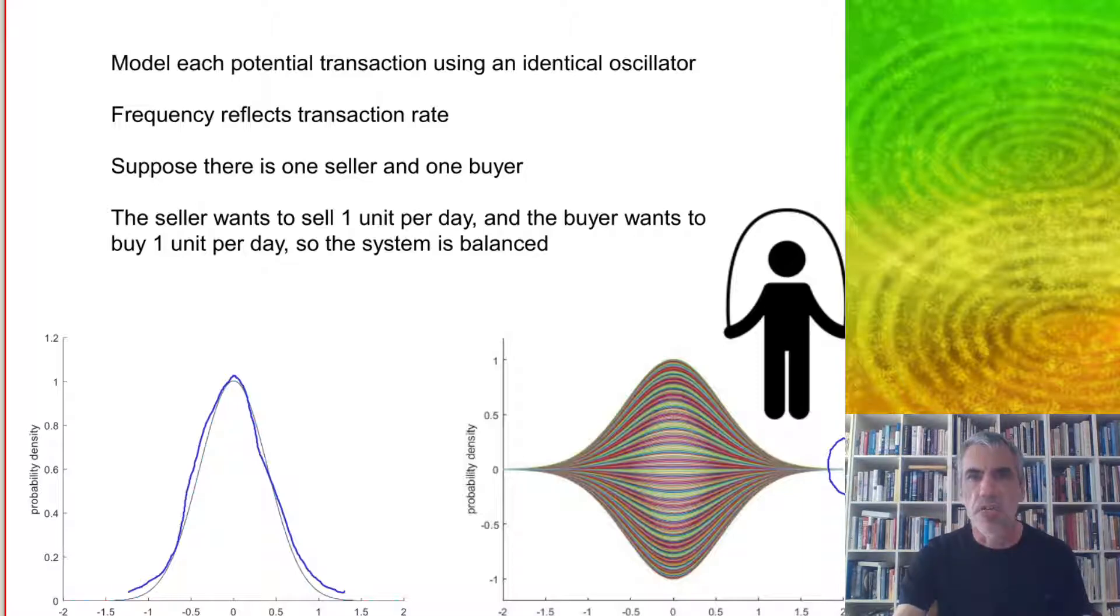So if the seller wants to sell one unit per day and the buyer wants to buy one unit per day, then the system is balanced and the frequency is going to be once per day.